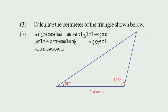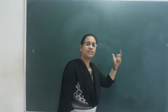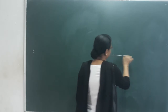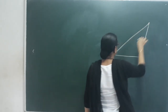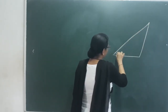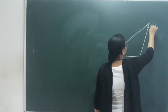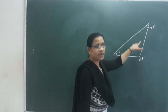The third question: calculate the perimeter of the triangle shown below. The triangle has angles 30 degrees, 105 degrees, and 45 degrees. We need to calculate the perimeter of this triangle.